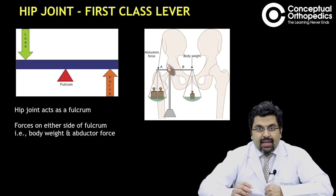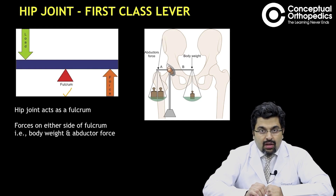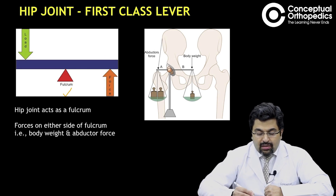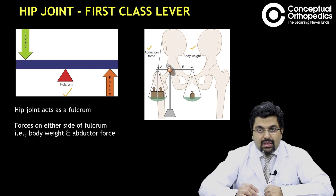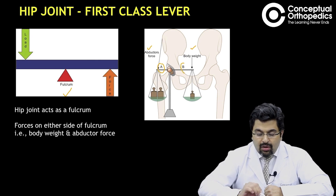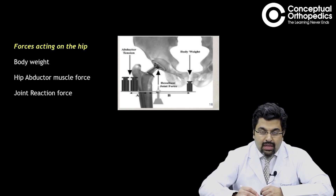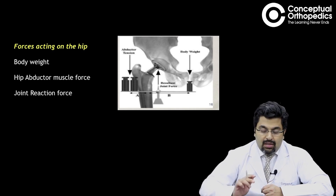The hip joint can also be classified as a first class lever, which means the fulcrum is in the center and the two forces — the force and the load — are on either side. In this illustration, the hip joint is the fulcrum, and the body weight and the abductor force are the two forces acting on either side. Here A is the abductor moment arm, and B is the body weight moment arm. So the forces acting on the hip are three: the body weight, the hip abductor muscle force, and the joint reaction force, which is a summation of body weight and abductor muscle force.